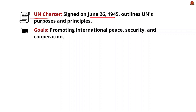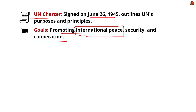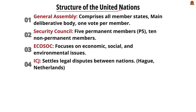The United Nations aims to promote international peace and act as a better alternative to the League of Nations. Now, the structure of the United Nations: the first body is the General Assembly, which comprises all member states and is the main deliberative body of the United Nations, where each member has one vote.